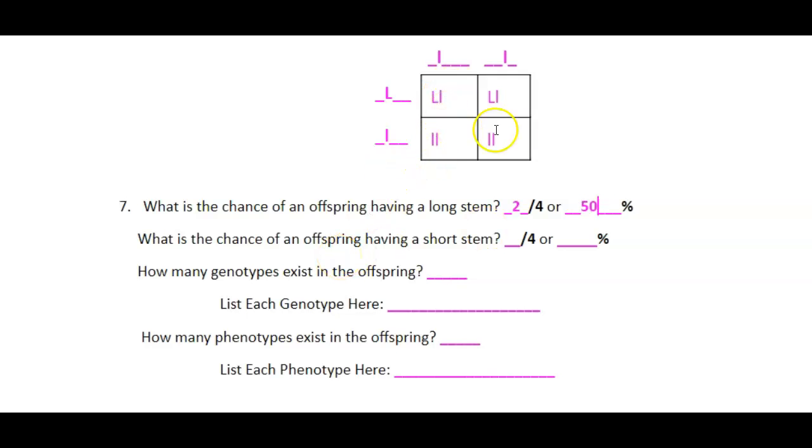What about a short stem? In order to have short stem, it's recessive. It's got to have two lowercase. So we're going to have two out of four or 50%.